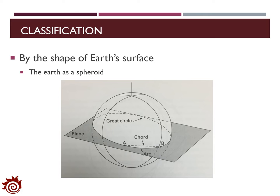Most of the surveying tasks are conducted on Earth, especially on the surface of the Earth. To classify the types of surveying, the shape of the Earth's surface is very critical. One most common assumption about the Earth's surface is that it is spherical. Based on this assumption, we can measure the distance between any two points on the Earth.